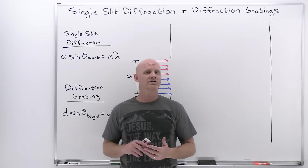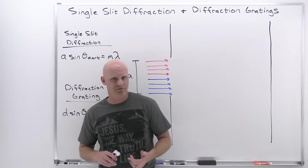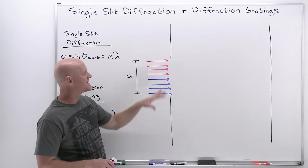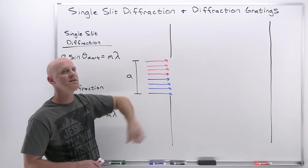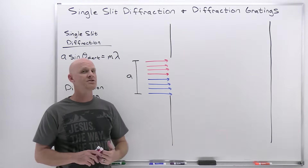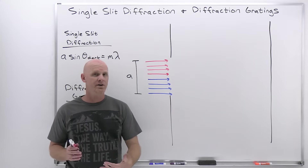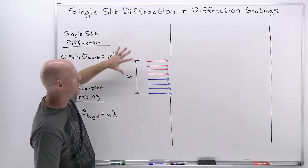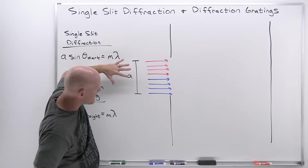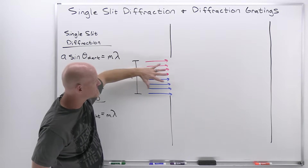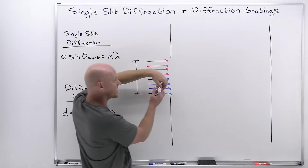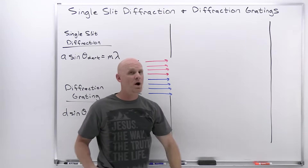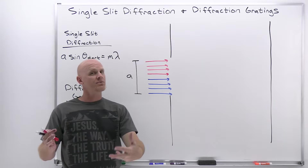We're going to start with single-slit diffraction, where light passing through a single slit has a chance to potentially interfere with itself. As light is passing through this slit, it's going to spread out in all directions. That's properly what's called diffraction.